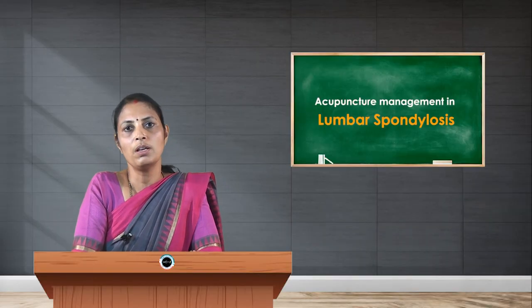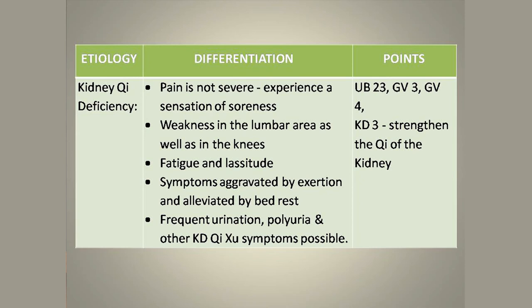Another etiology is deficiency of kidney energy or kidney qi. In this case, pain may not be severe but there is always a feeling of soreness, discomfort, and weakness in the lumbar area and knees, fatigue and lassitude. Symptoms are aggravated by exertion and alleviated by bed rest. Frequent urination, polyuria, and other kidney xu symptoms are possible. The points used are UB23, GV3, GV4, and Kidney 3 to strengthen the qi of the kidney.